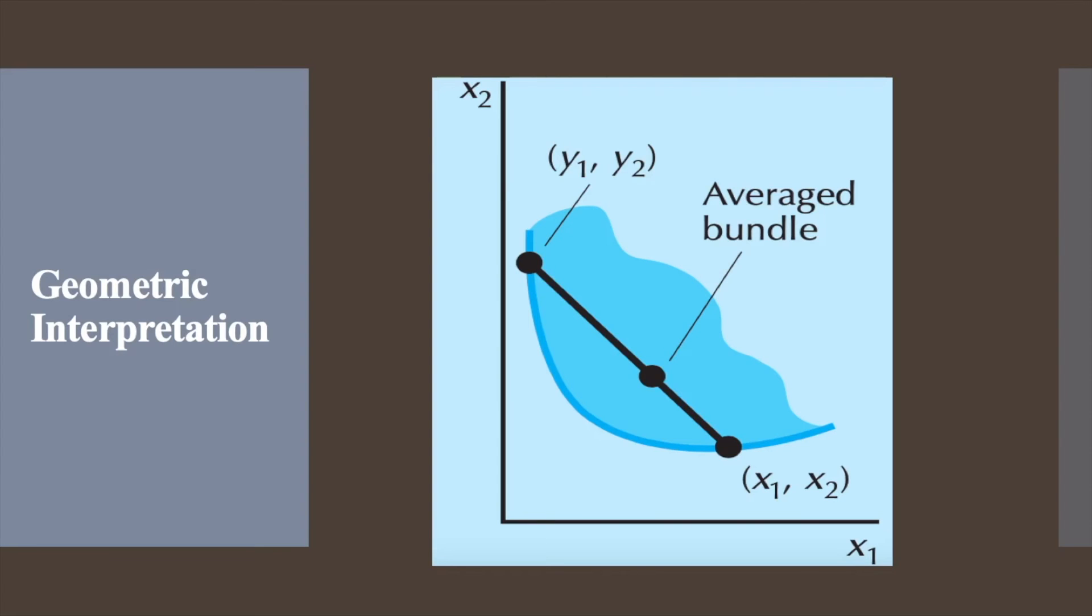Weakly preferred to means that the weighted average of the bundles (x1, x2) and (y1, y2) are at least as good as the extreme bundles (x1, x2) and (y1, y2).